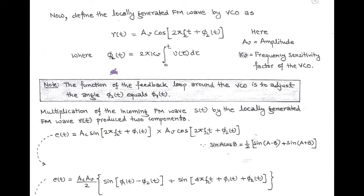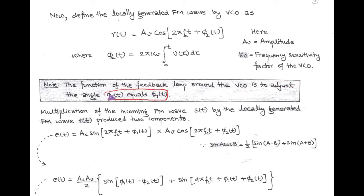The incoming FM wave and the locally generated FM are multiplied by the multiplier to produce an error signal E(t). The main function of the feedback loop containing the VCO is to adjust the angle φ2(t) such that it becomes equal to φ1(t).